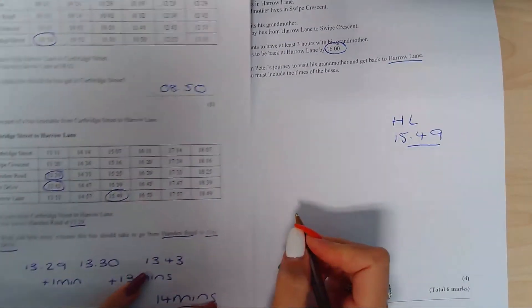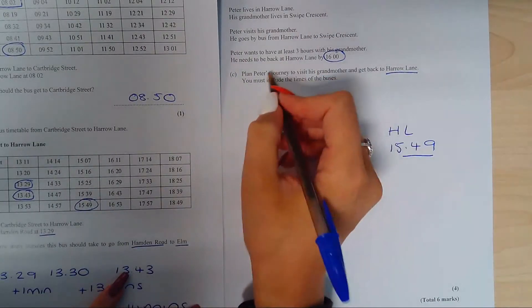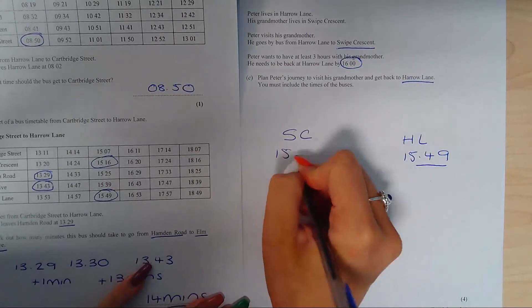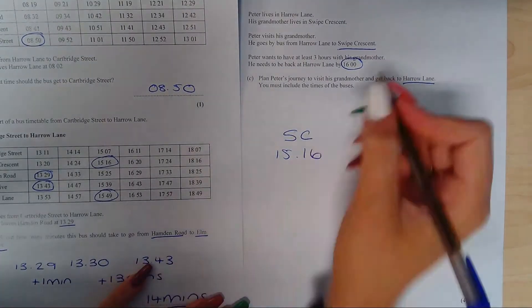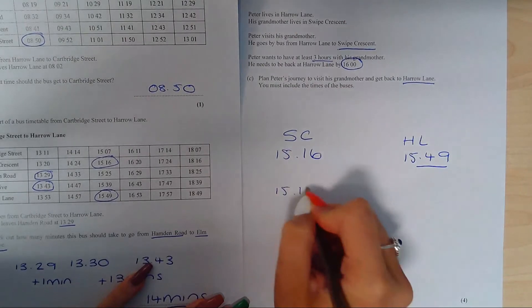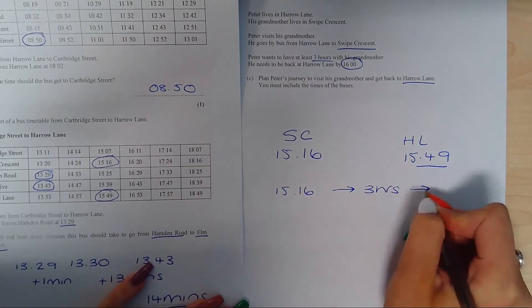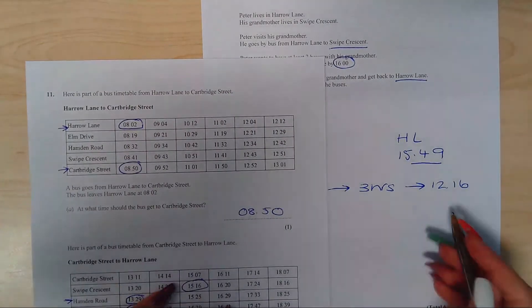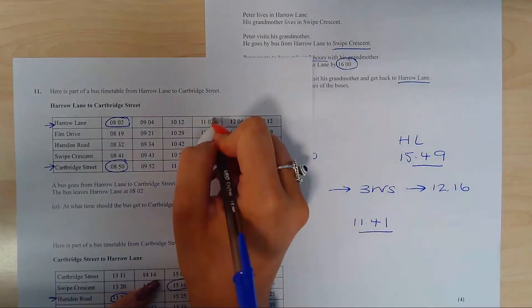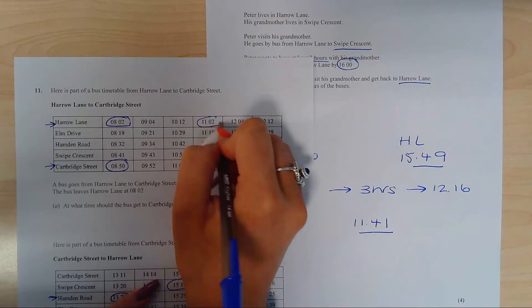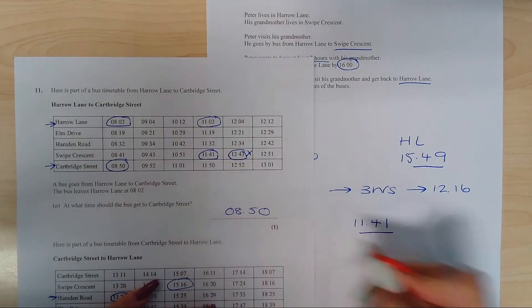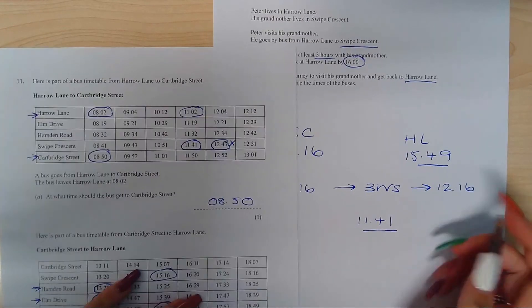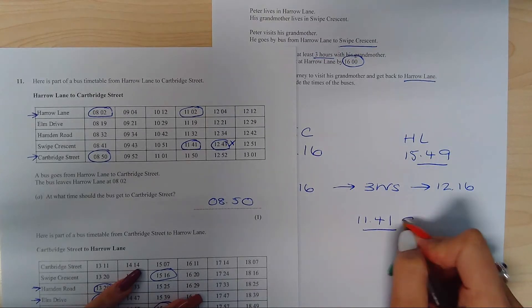Which means he would have to leave his grandmother's at Swipe Crescent at 15:16. He wants to spend three hours with his grandmother, which takes him to 12:16, what time he can arrive at his grandmother's. You then need to look at the initial table and find where he could get the 11:02.